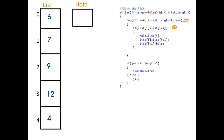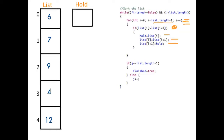We increment our i again. We're now looking at positions three and four. Is 12 greater than four? Yes, it is. So we take the 12 and we put it into hold. The next line says that we take what is in the position of i plus one — so four — and we move it up to position three. That last line says to take what's in hold and move it down. So we've finished that little loop. Our i was currently equal to three, and three is list dot length minus one. So we increment our i, i becomes four and that is false.